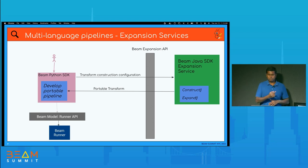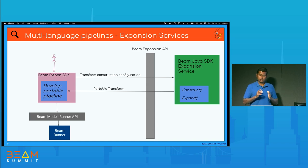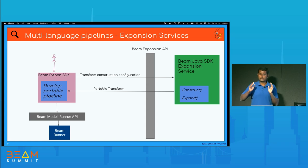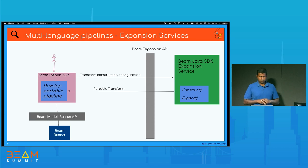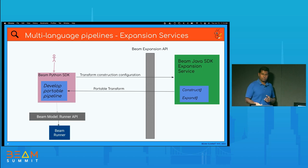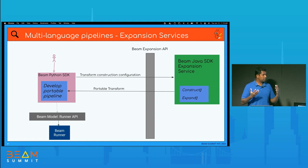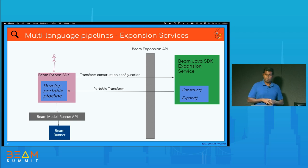Once the expansion service sends the response back to the Python SDK, the response contains the fully defined Java portable transform ready to be included in the larger pipeline. The Python SDK then figures out the complete pipeline and submits it to the runner through the Runner API.